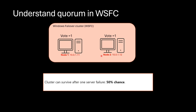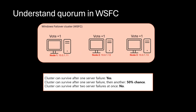If you have two nodes in the cluster with two votes, there is a 50% chance the cluster can survive after one server failure, and a 50% chance it might fail. With three servers, the cluster can definitely survive after one server failure. If one server fails and then another fails, there is a 50% chance it can survive — as long as they fail one after another, not simultaneously.